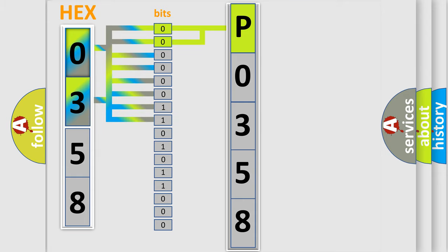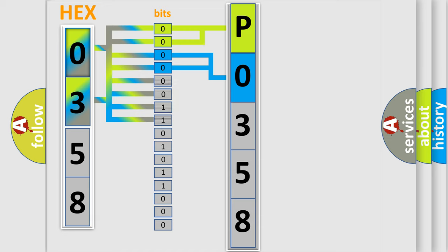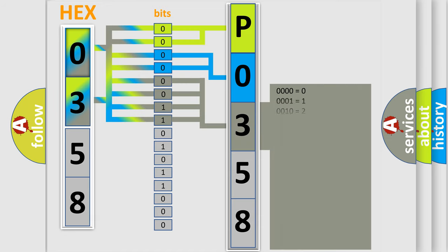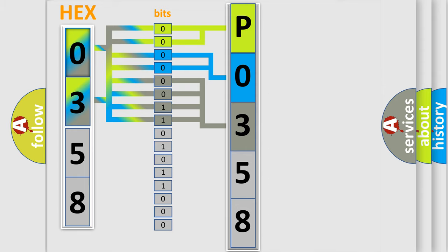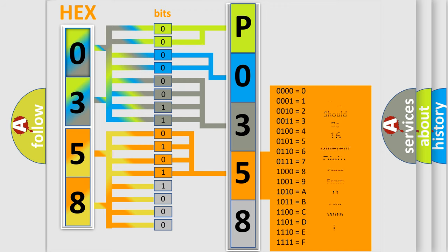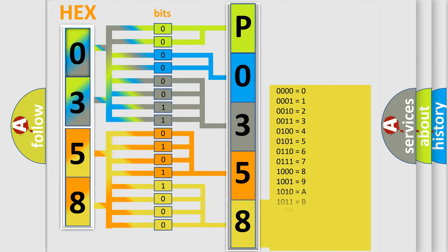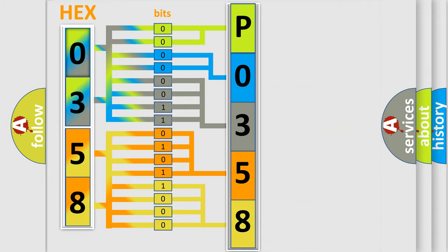The next two bits determine the second character. The last bit styles of the first byte define the third character of the code. The second byte is composed of a combination of eight bits. The first four bits determine the fourth character of the code, and the combination of the last four bits defines the fifth character. A single byte conceals 256 possible combinations. We now know in what way the diagnostic tool translates the received information into a more comprehensible format.